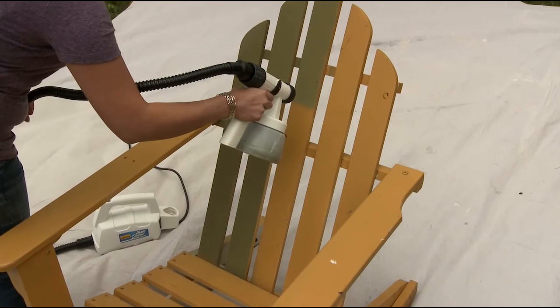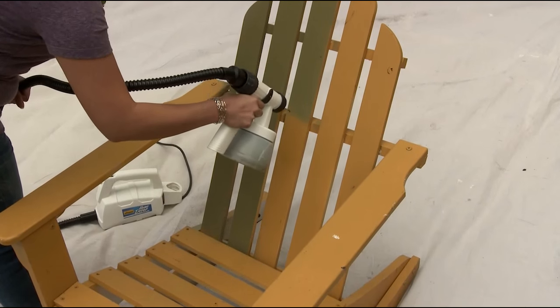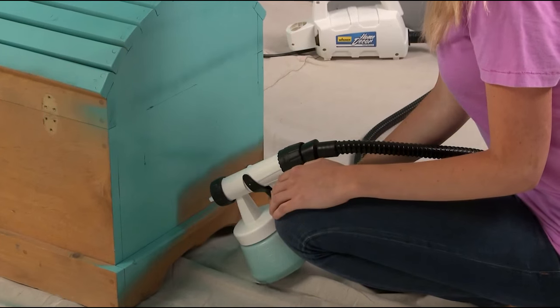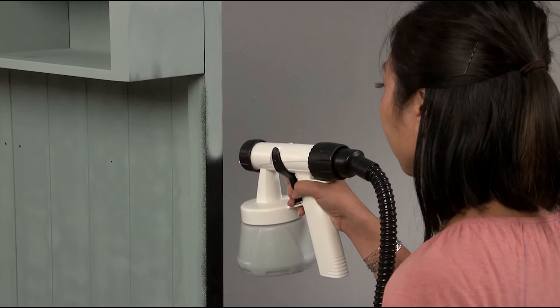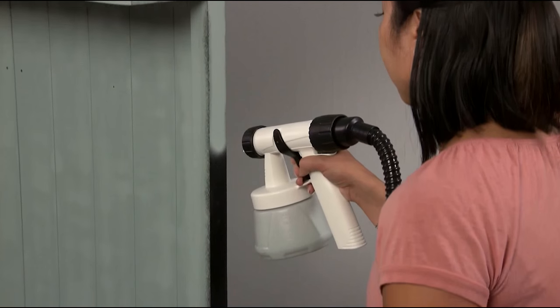The motor is housed in the base of the unit, so the weight is on the ground, not in your hand. With a six-foot hose and lightweight spray gun, you can easily maneuver around pieces as well as into small spaces and tight corners.